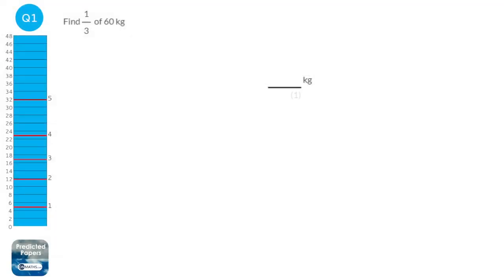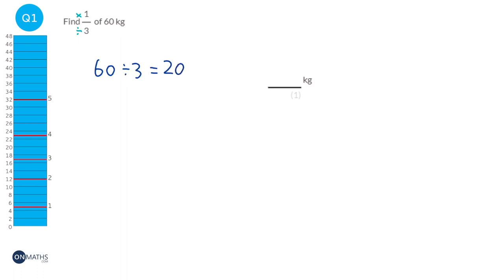To find a fraction of an amount, we divide by the bottom of the fraction and times by the top. So we're going to do 60 and divide it by the denominator, which is 3. 60 divided by 3 is 20. Then we're going to do 20 times 1, which will just remain 20. So our answer is 20 kilograms.